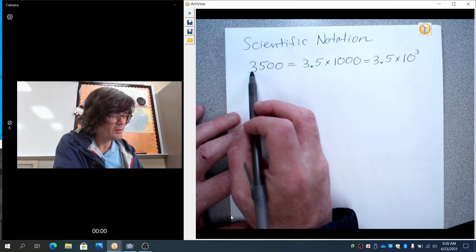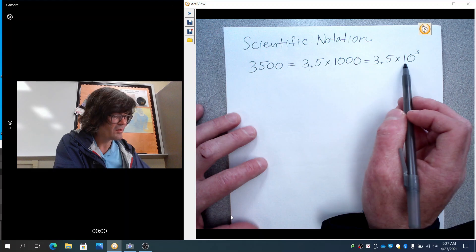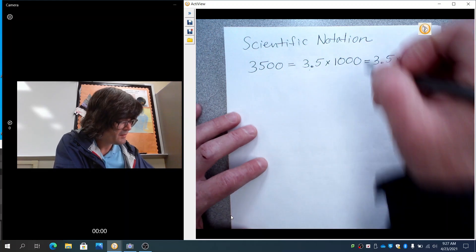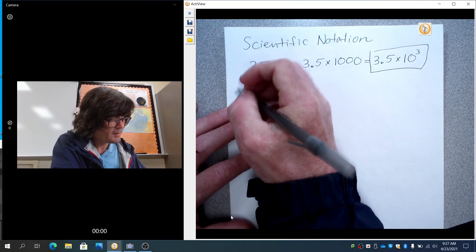But for now, 3,500 is 3.5 times 1,000, and that in turn, 1,000 is 10 to the third. This is the scientific notation version of that number. Let's try another one.